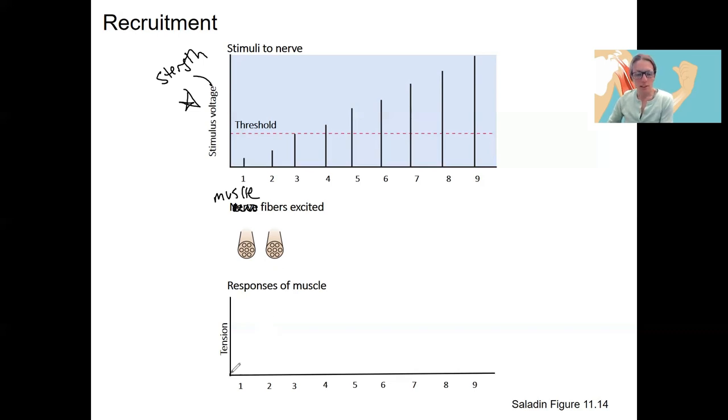There's some amount of threshold, of stimulus we need to be able to respond. Once we cross thresholds, things are going to start to change. So at that first blip, we might have, that first stimulus that meets threshold, we might have a little bit of tension. Here, a little bit bigger, right?